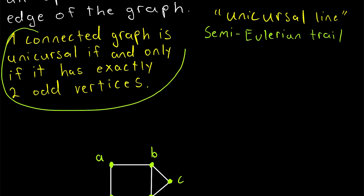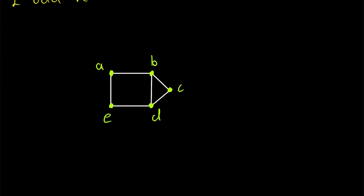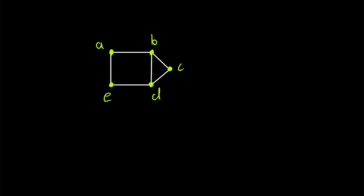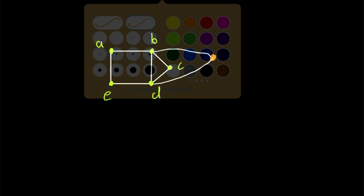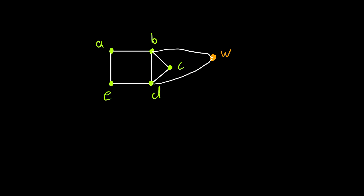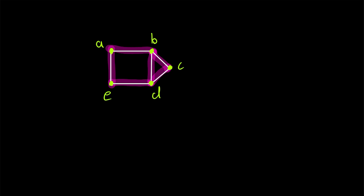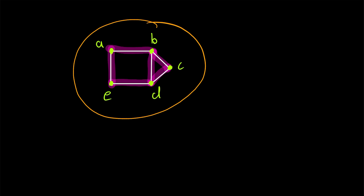We will not prove this characterization of unicursal graphs in this lesson, but let me briefly describe the proof. The proof uses our characterization of Eulerian graphs. First, if we suppose that we've got exactly two odd vertices in a connected graph, then we could create a new graph by adding an additional vertex W and joining those two odd vertices to W with an edge. Since we've increased the degrees of the two odd vertices by one, all degrees in our graph must now be even, thus our new graph is Eulerian. We could imagine an Eulerian circuit that starts and stops at W, and then deleting that vertex and its incident edges — reverting back to our original graph — would leave us with a unicursal line, the remains of that Eulerian circuit.